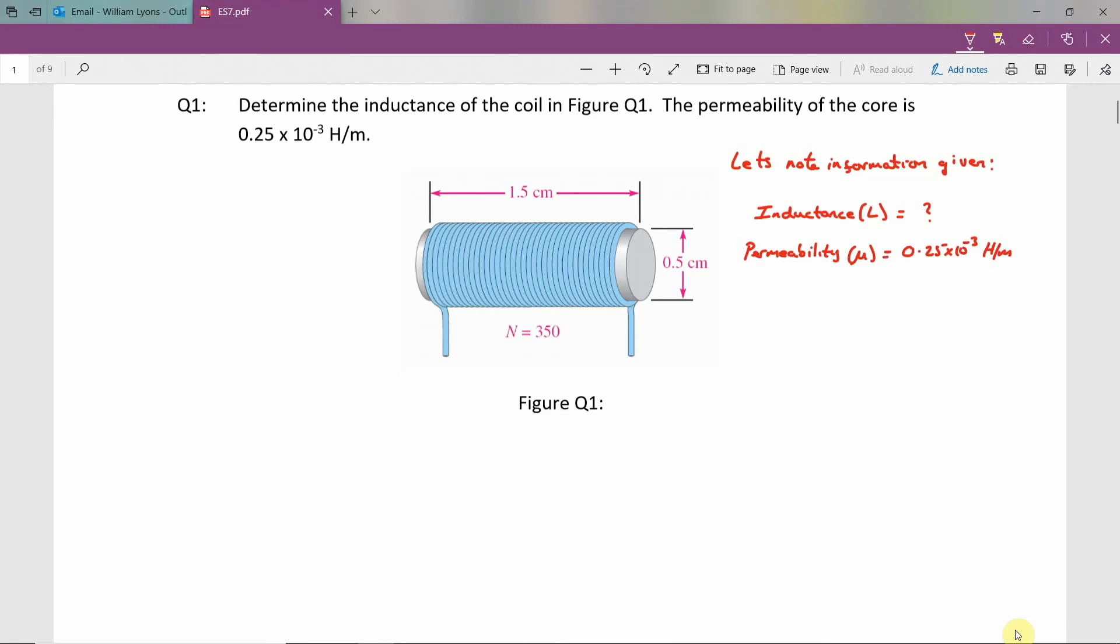We are also shown here that the length is 1.5 centimeters, so the length L equal to 1.5 centimeters, which when we convert to meters is equal to 0.015 meters.